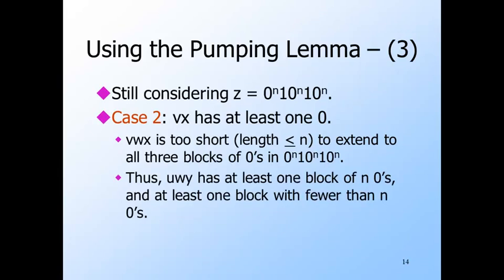So again, consider u w y, which if L is context-free, must be in L. Removing v and x must leave at least one of the three blocks of n zeros intact, so it still has n zeros.